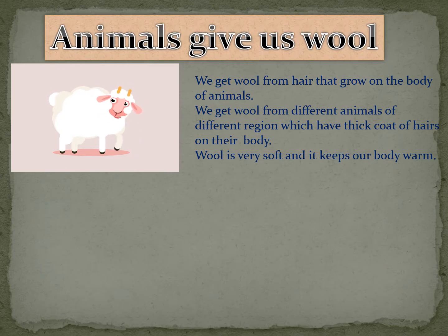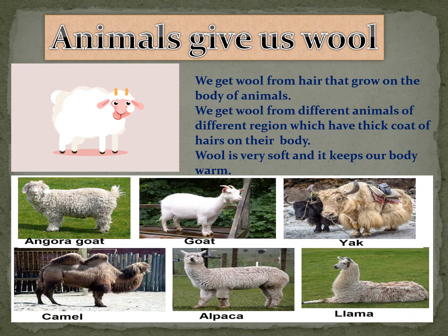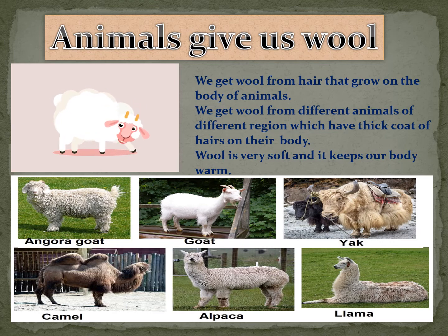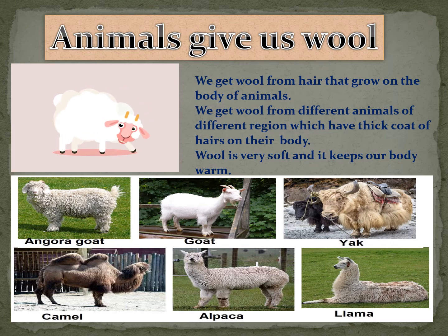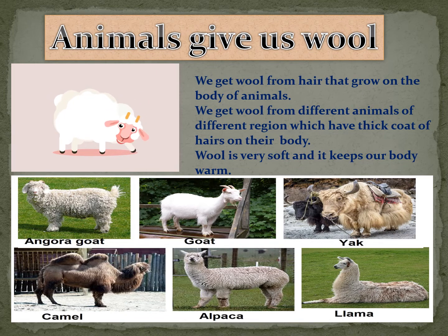In animal fibers, first we will see animals that give us wool. We get wool from hair that grows on the body of animals. We get wool from different animals of different regions which have a thick coat of hairs on their body. Wool is very soft and it keeps our body warm.